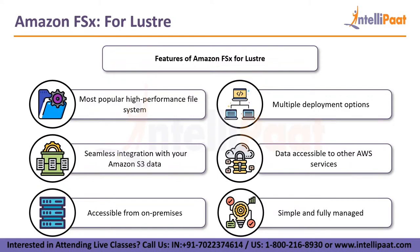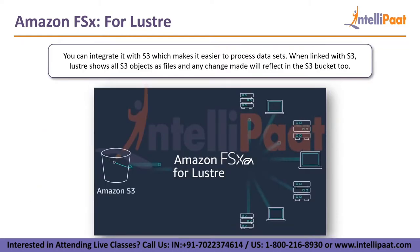The two main features are: it's the most popular high-performance file system, and it has multiple deployment options — EFS can only be deployed on Linux, but Lustre can connect to various operating systems. When integrated with S3, Lustre shows all S3 objects as files, and any change made reflects in the S3 bucket too. If you connect FSX for Lustre to your S3 bucket, all bucket objects appear in the Lustre file system and vice versa. Changes in either location sync to the other, allowing real-time access to large datasets stored in S3.